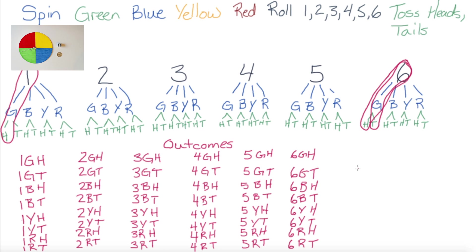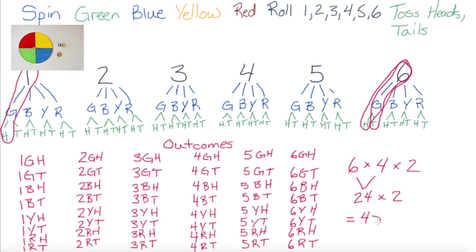As we did in example 1, we could count all the possible outcomes. However, there is a more efficient way: the die has 6 sides, the spinner has 4 equal sections, and the coin has 2 sides. So 6 multiplied by 4 is 24, and 24 multiplied by 2 gives us a total of 48 possible outcomes.